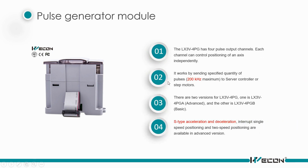Next, we'll talk about the pulse generator module — the 4PG. The 4PG has 4 pulse output channels; each channel can control the positioning of an axis independently. It works by sending a specific quantity of pulses. There are two versions: 4PG-A and 4PG-B. It supports S-type acceleration and deceleration, and internal single-speed and 2-speed partitioning are available in the advanced version.